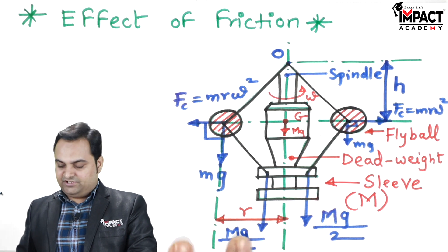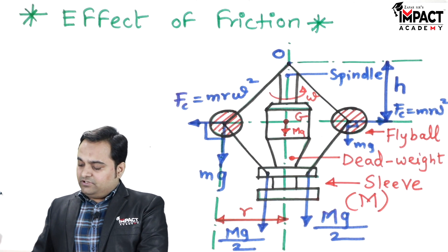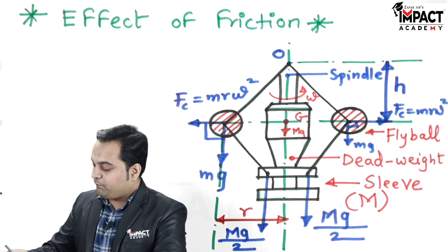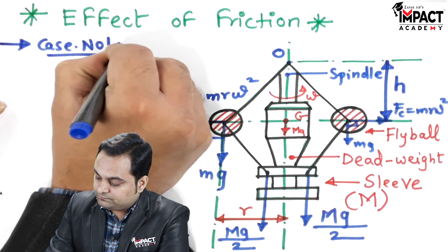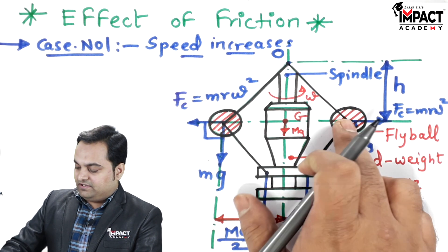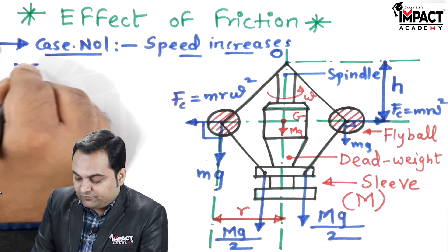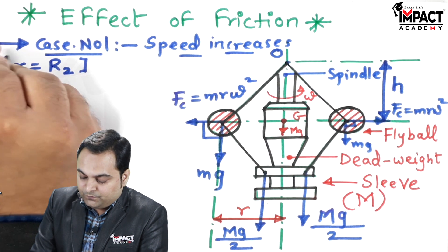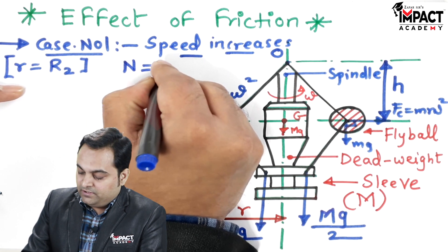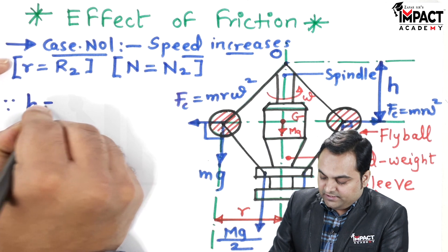To analyze the effect of friction, first I consider the condition when the speed of the engine increases. When speed increases, the fly balls move away, so the radius of rotation increases to capital R2. The speed at radius R2 is denoted as N2 RPM. The height of the governor is given by the formula: h = g/ω².